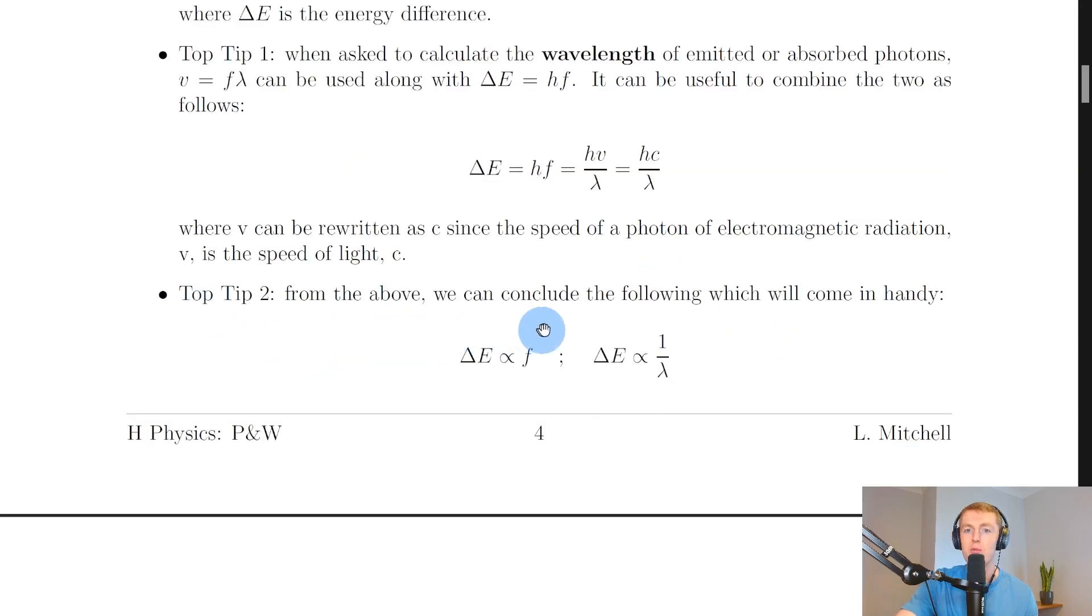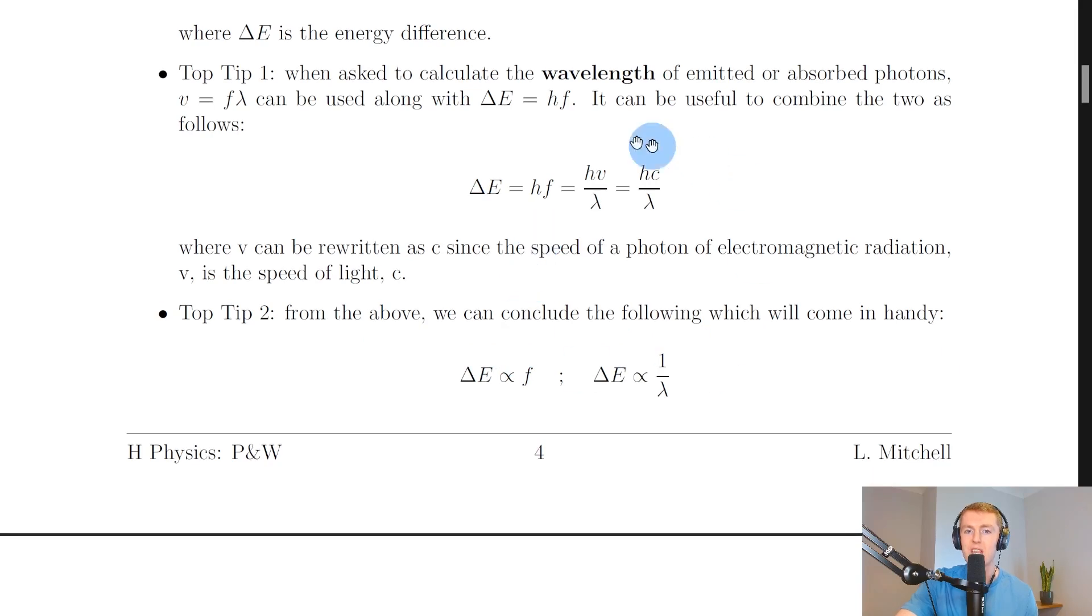Top tip number two: from the above we can conclude that delta E is proportional to f, meaning the change in energy is directly proportional to the frequency. The bigger the frequency the bigger the change in energy. We also have delta E equals hc over lambda so delta E is directly proportional to 1 over lambda. The change in energy is inversely proportional to wavelength. For shorter wavelengths we have a greater energy difference or for longer wavelengths a smaller energy difference. You'll see how we use these proportional relationships in the questions in the worked example video.